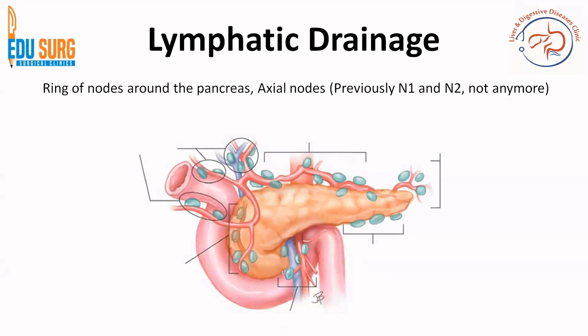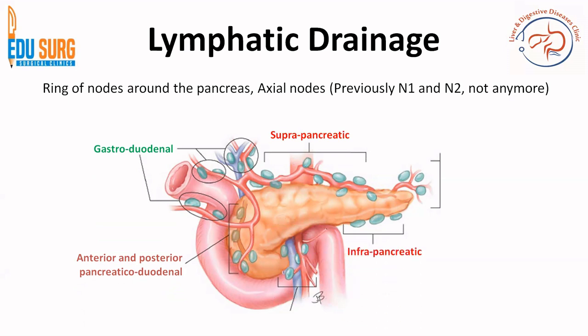When we come to lymphatic drainage of pancreas, as you will all know, previously in the AJCC staging the N1 and N2 would help us in remembering the different nodes around the pancreas. There are two rings of nodes around the pancreas. The first ring of nodes is more like the primary drainage, and from these nodes the lymphatic drainage goes towards the axial or central nodes of the pancreatic drainage system.